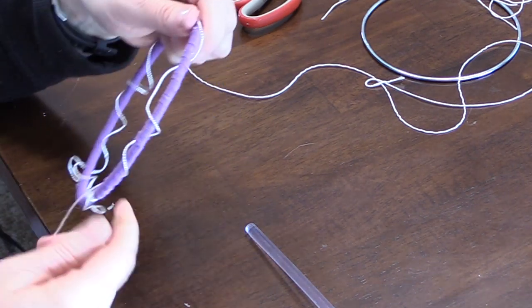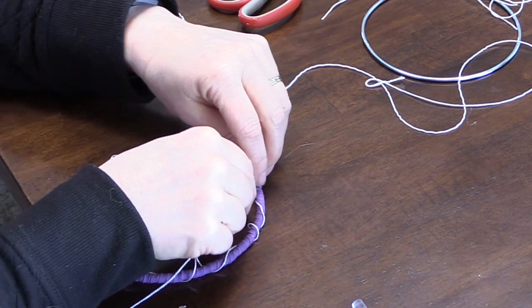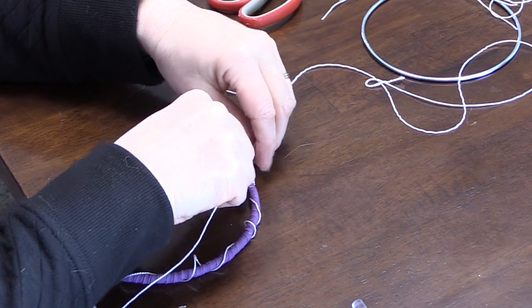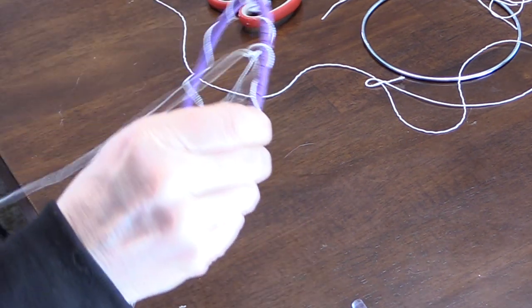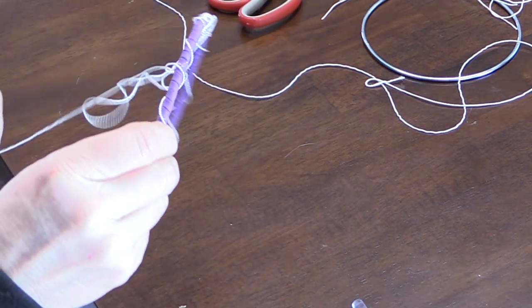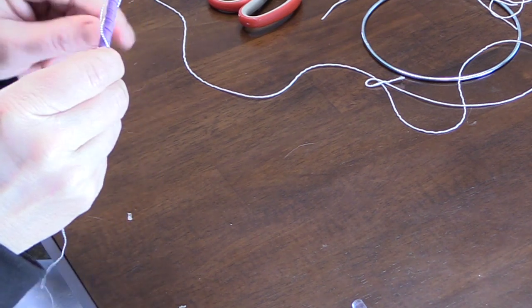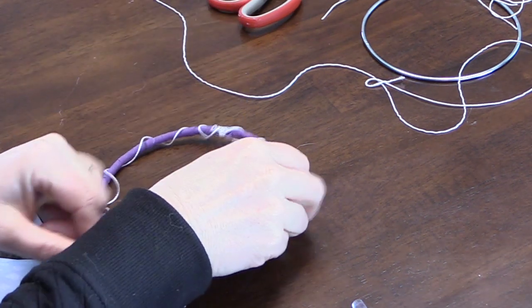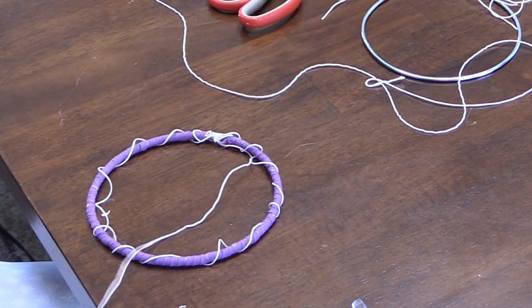I think you can see I've gone around one time with the white string, so now I'm coming back and I'm just grabbing the loop of the previous round of string that I did, and this is what's going to give it that web appearance.